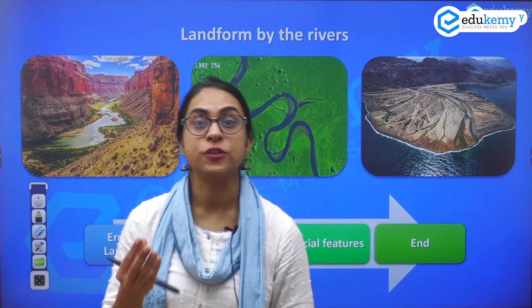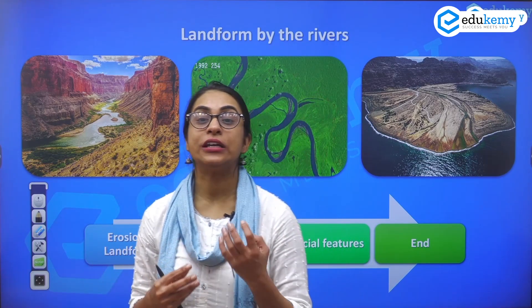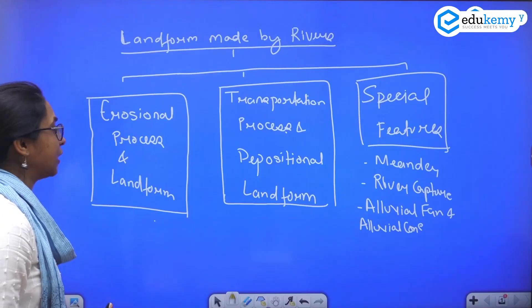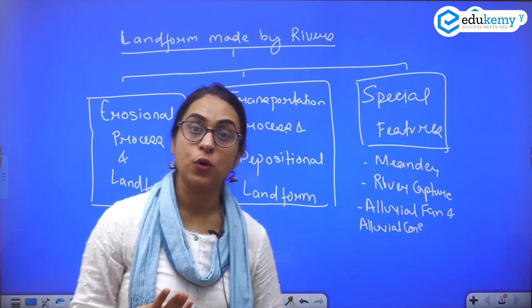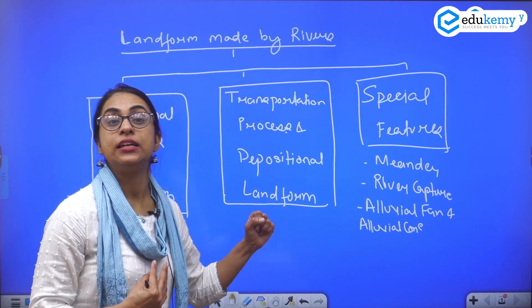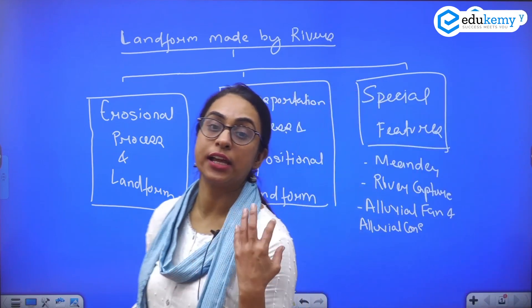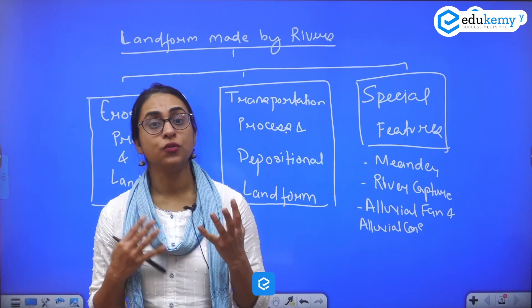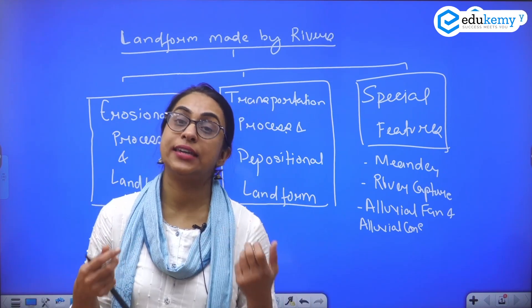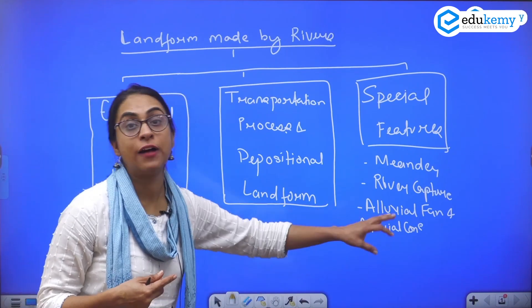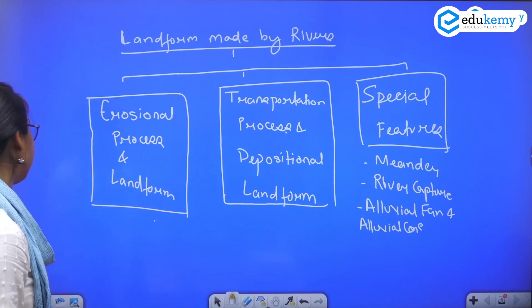The features like gorges, canyons, and deltas are very common, but there are also special features which the river creates like meanders, oxbow lakes, alluvial fans, and alluvial cones. So we need to understand how meanders form, what is an oxbow lake, what is an entrenched meander, what do we mean by river lengthening, river capture, and what is the difference between alluvial fan and alluvial cone. These are some of the unique features created by the river, and we will be dealing with them one by one.